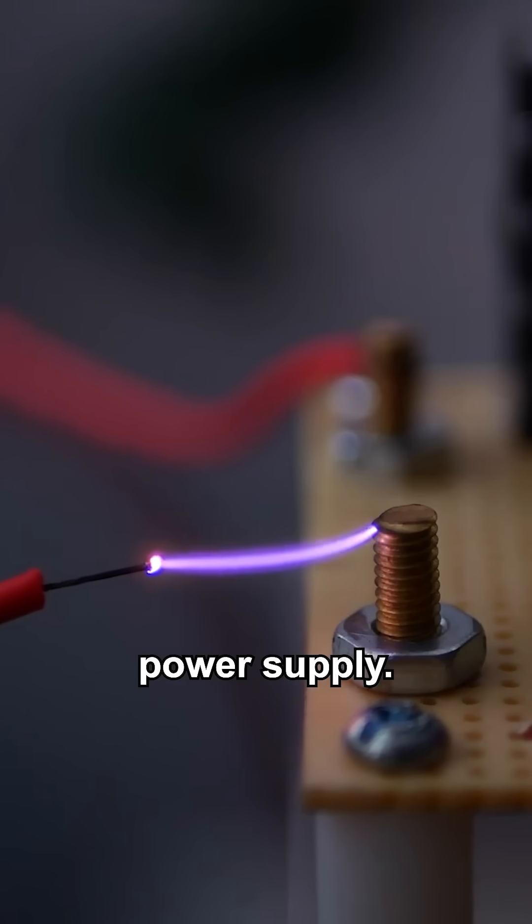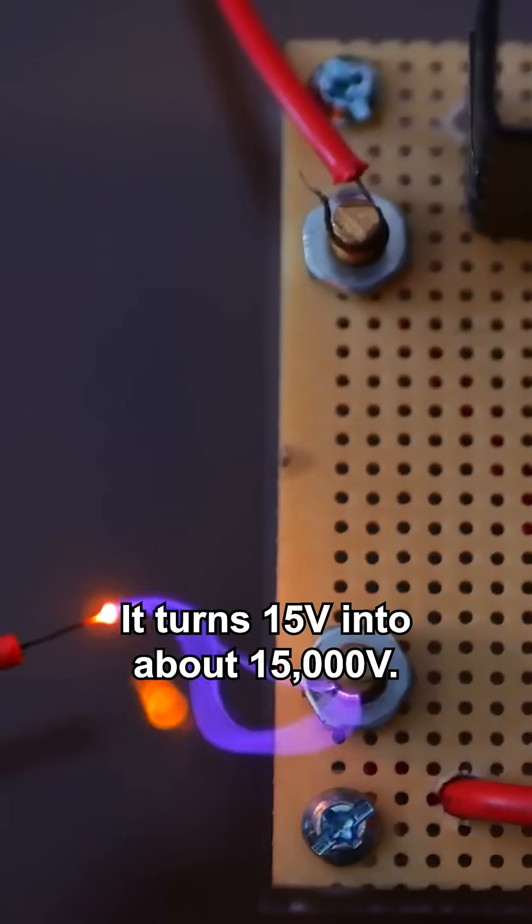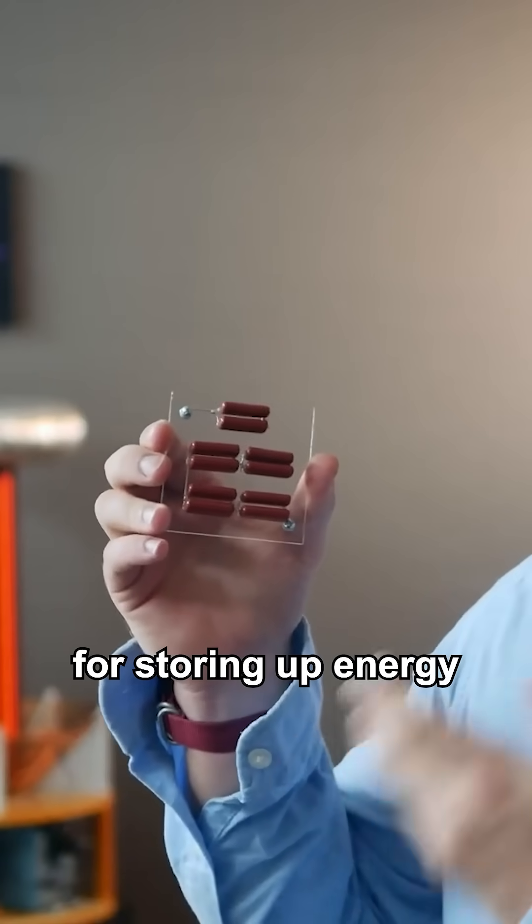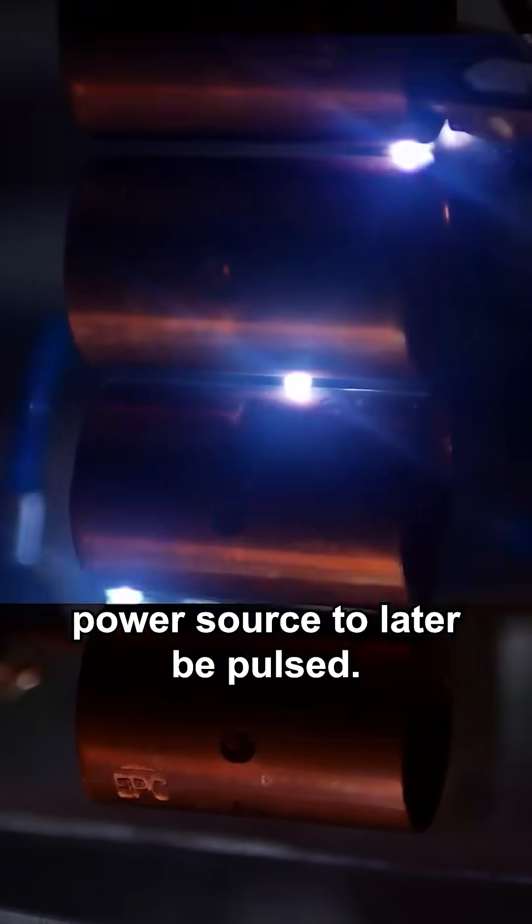This coil does use the high voltage power supply. It turns 15 volts into about 15,000. And the primary capacitor is responsible for storing up energy from the high voltage power source to later be pulled.